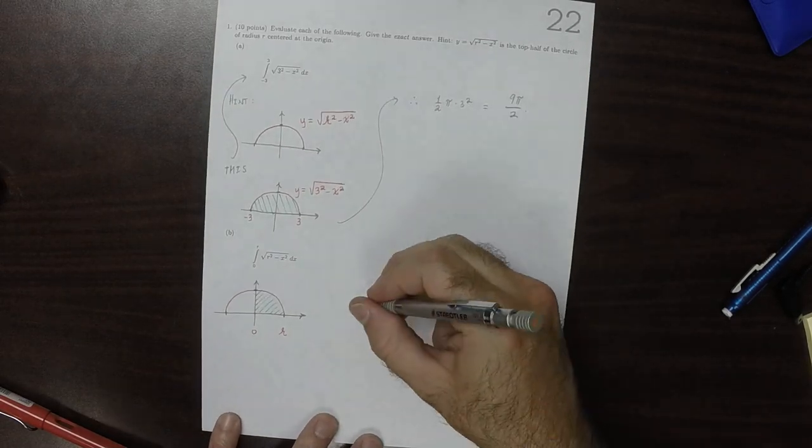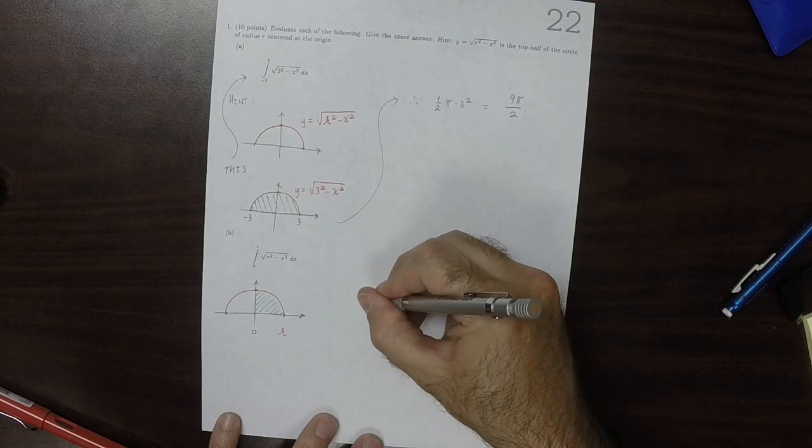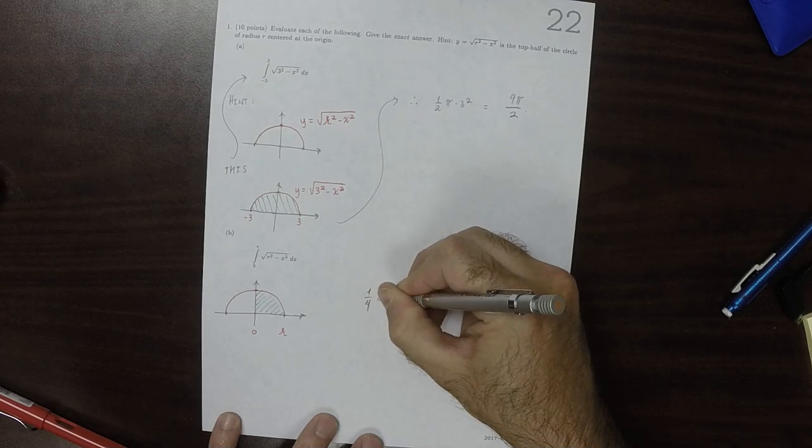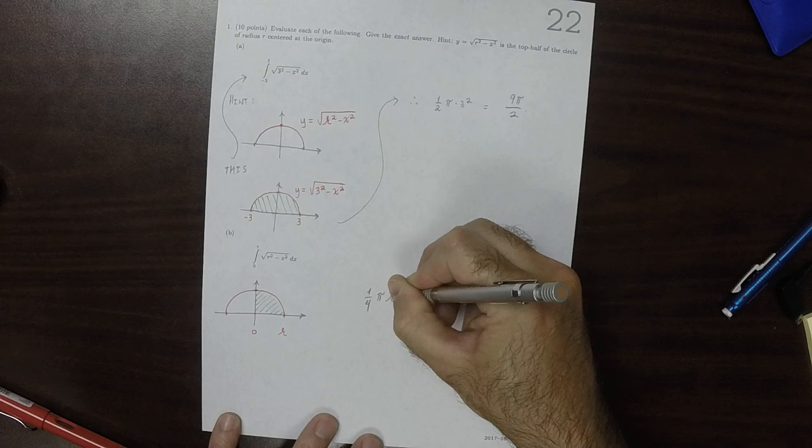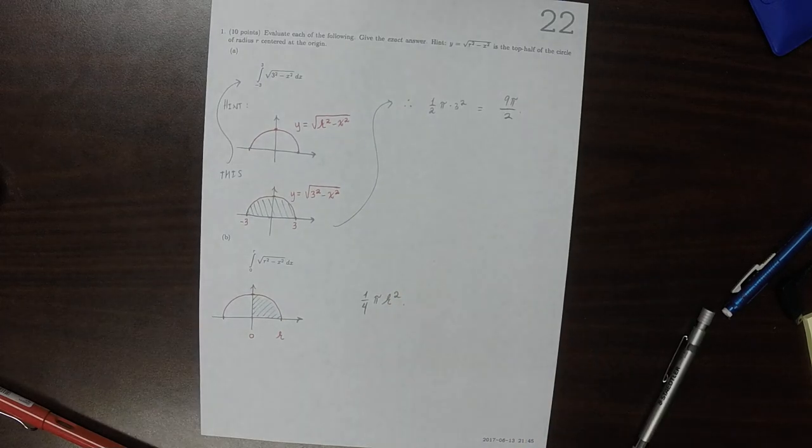And, therefore, the area is one fourth pi r squared. And that's the answer.